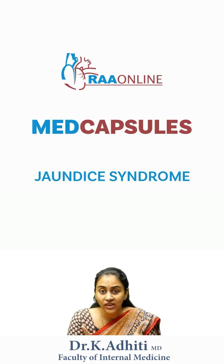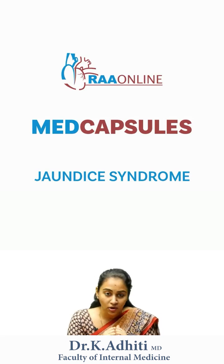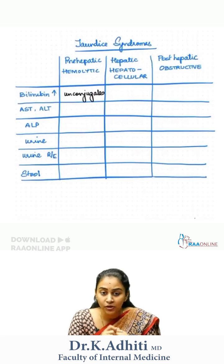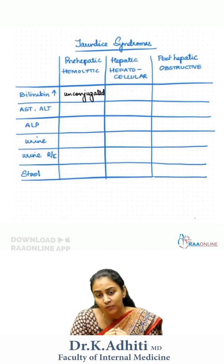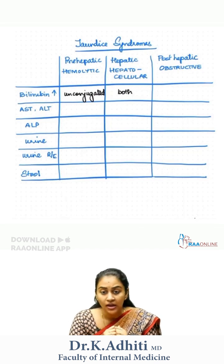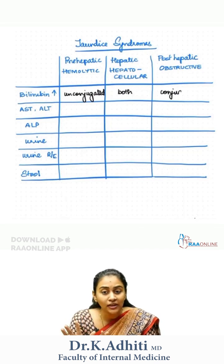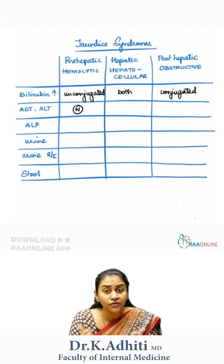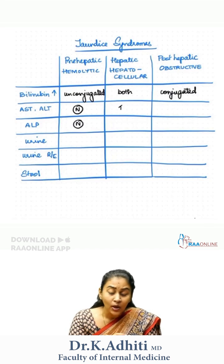I'm going to give you all a quick cheat sheet to solving your jaundice. If you have predominantly an unconjugated hyperbilirubinemia, it's hemolytic jaundice. If it's predominantly conjugated, it's obstructive jaundice. If it's both, it's going to be hepatocellular.